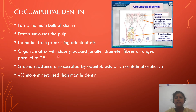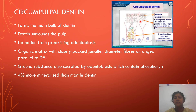The circumpulpal dentine forms the main bulk of dentine. This is the dentine which surrounds the pulp and it forms from pre-existing odontoblasts. In circumpulpal dentine, the organic matrix fibers are closely packed, smaller diameter fibers arranged parallel to the dentino-enamel junction. The ground substance is also secreted by odontoblasts and contains phosphorin. This circumpulpal dentine is 4% more mineralized than mantle dentine.